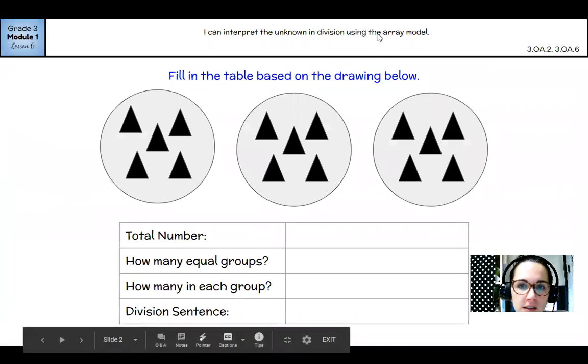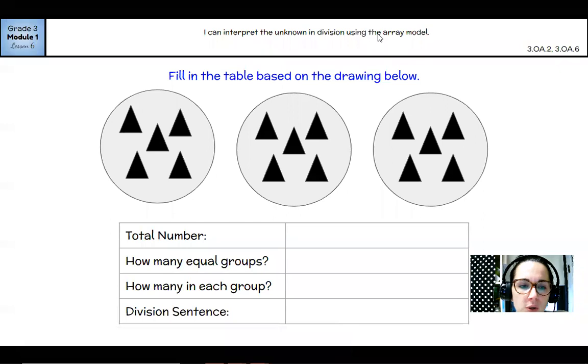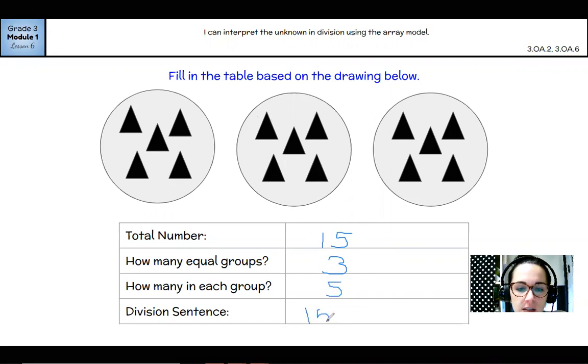Fill in the table based on the drawing below. Total number: 1, 2, 3, 4, 5, and I know that there are 5 in each of these that makes 5, 10, 15. How many equal groups? 1, 2, 3. How many in each group? 5 here, 5 here, 5 here. So that means that 15 divided by 3 equals 5. And I'm sorry about the sloppy drawing, but that's just how it goes when you're using a mouse.